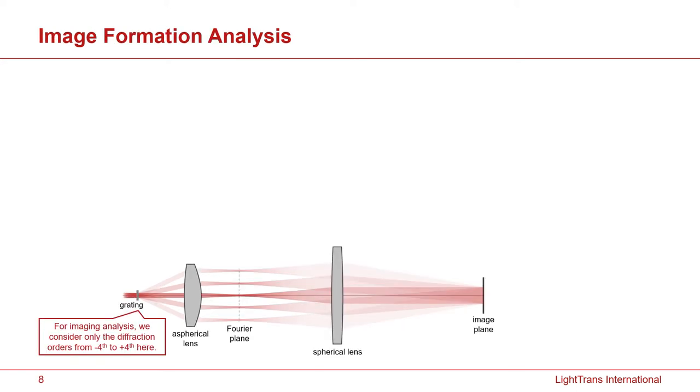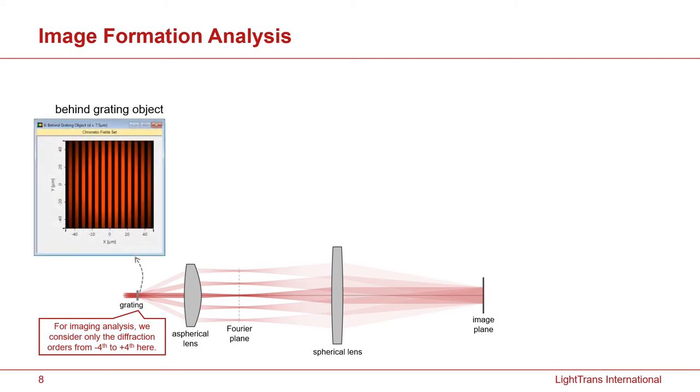Now let's see what we can do with VirtualLab on this example. First of all, you can investigate exactly the diffraction property of a grating. In this case, we are simulating the field which is directly behind the chromium grating. So here you can see the alternating bright and dark stripes which you can expect from a periodic chromium metal grating.